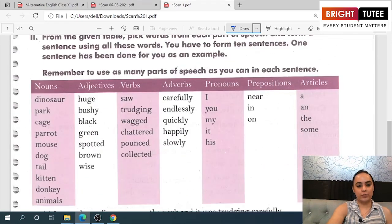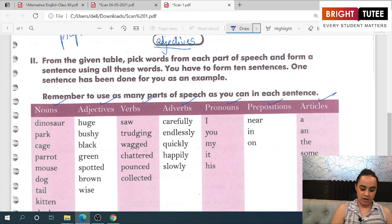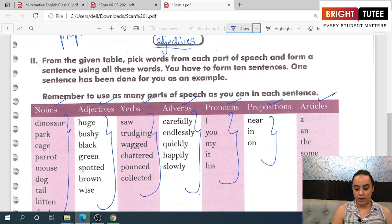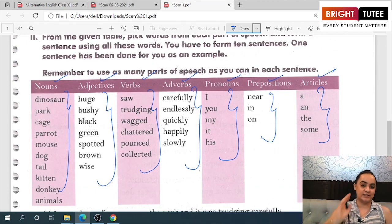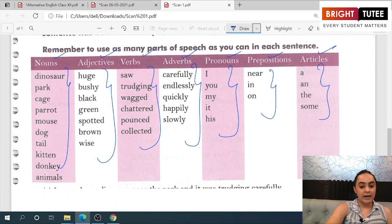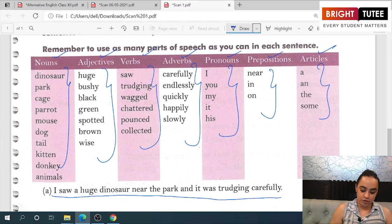Now look at the next question given to you. It says that from the given table—you can see there is a table with different categories, different parts of speech—you have to choose randomly any word from any column and make a sentence using it.